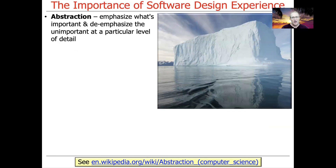At the essence of this is the concept of software quality attributes. One of the key software quality attributes is abstraction, which is an age-old way of being able to emphasize what's important at a given level and de-emphasize what's unimportant. Depending on what stage you're at, what role you play, and where you are in the life cycle of developing software, certain things are more important at certain times. The role of abstraction is to help separate concerns so that you focus at the right level, at the right point, at the right time.